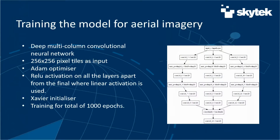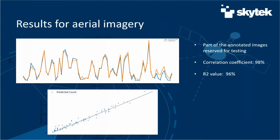The next step was to train the model for aerial imagery. We used a custom deep multi-column convolutional neural network with the ADAM optimizer and ReLU activation on all layers apart from the final one, where linear activation was used. We used the Xavier initializer and trained the model for a total of 1,000 epochs. The results were very good — we achieved a correlation coefficient of 98% and an R-value of 96%.